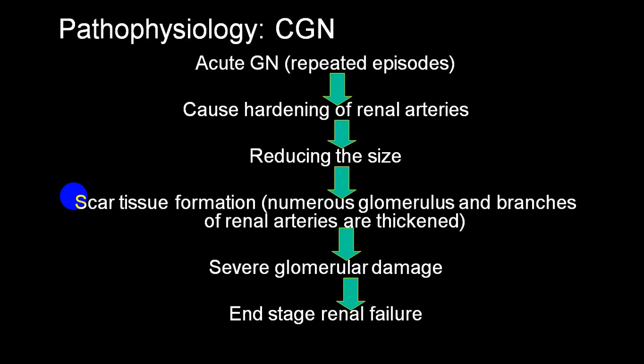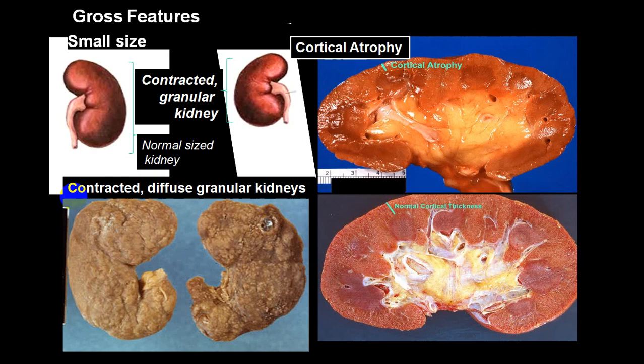Repeated episodes of acute glomerulonephritis result in hardening of arteries, reduction in size, scarring of tissue, severe glomerular damage, and finally end-stage renal failure. This diagram shows a normal kidney which slowly becomes smaller in size. The term commonly used is 'contracted granular kidney' — not because of muscular contraction, but because of scarring. This small, heavily scarred kidney is the classical appearance in chronic glomerulonephritis.